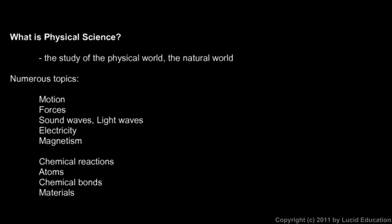This is a course in physical science, so let's start by defining the term. What is physical science? It's a study of the natural world, the physical world. It's a science, which means that the theories are tested scientifically. In order for a scientific theory to be considered valid, to be considered correct, it has to match what is observed in the real world. A scientific theory is considered true or false based on whether the experimental evidence supports it or falsifies it.